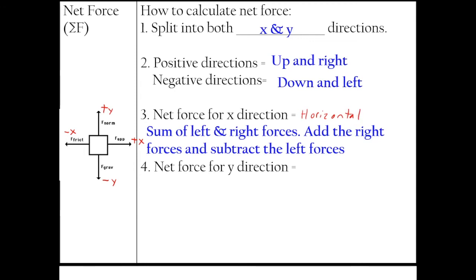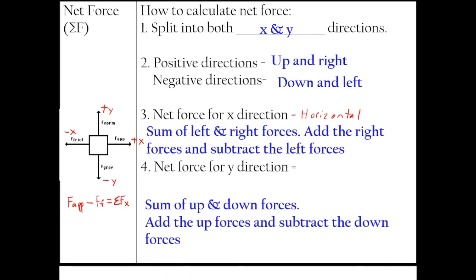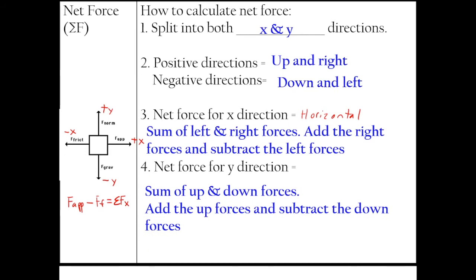To find net force in the x direction, we add forces pointing right and subtract forces pointing left. So for this problem, I would have force applied minus force friction, because force applied points right and force friction points left — that gives the net force in the x direction. For the y direction, we add forces pointing up and subtract forces pointing down. So force normal minus force gravity equals the net force in the y direction.